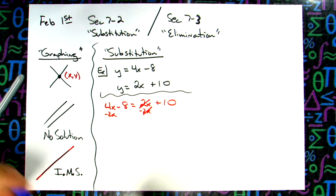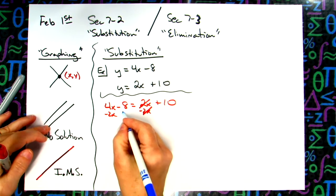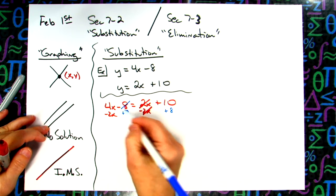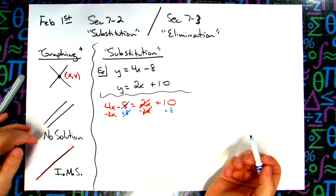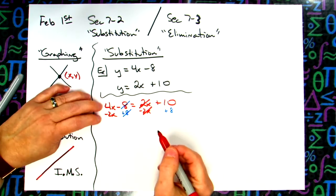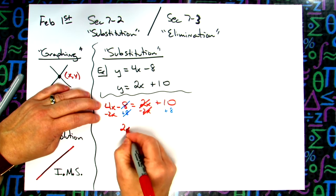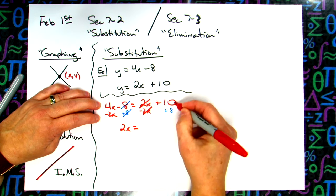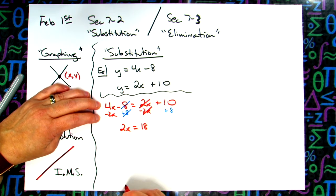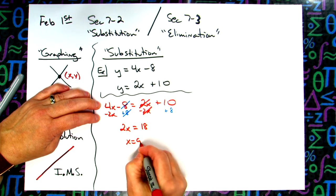2x minus 2x goes away. We added 8 and we added 8. Minus 8 and plus 8 went away. That allowed you to move the letters to the left and the numbers to the right. These are like terms. So now 4x minus 2x gives me 2x, and 10 plus 8 gives me 18. Then I can go ahead and solve. Divide both sides by 2. x equals 9.